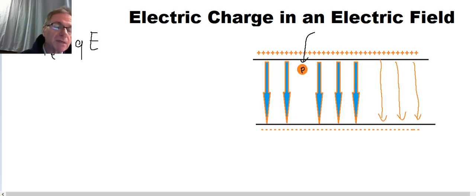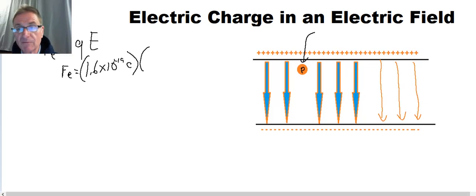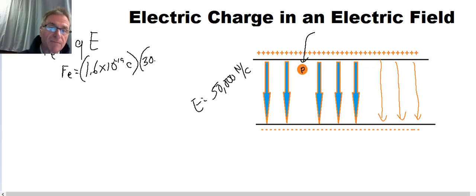So all we really need to do here is set Fe equal to the charge on a proton, which is going to be 1.6 times 10 to the minus 19th coulombs times the value of the electric field. Well, we haven't really said what the value of the electric field is. So we're going to say that it is 50,000 newtons per coulomb.